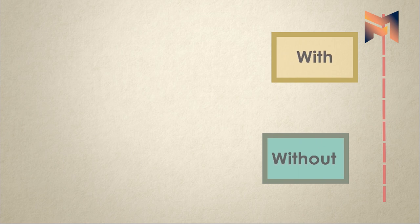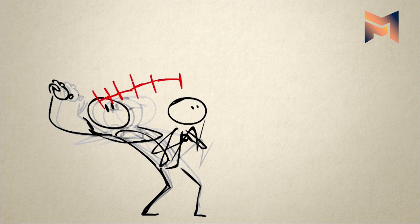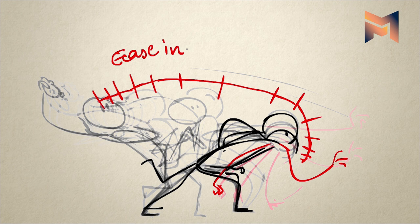Without slow in and slow out, the things feel mechanical. That's because robots are one thing that moves its part with constant speed. It is similar to the easy ease object that starts with slow and ends with slow.